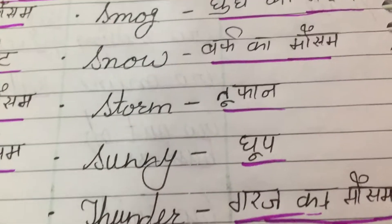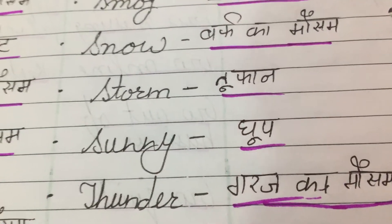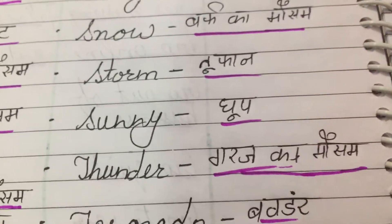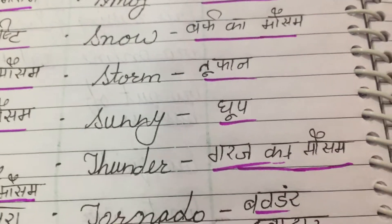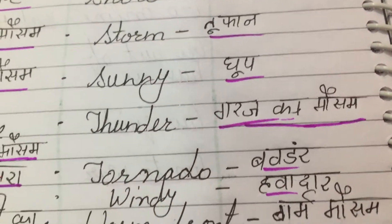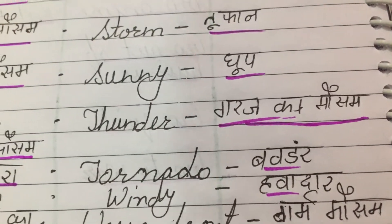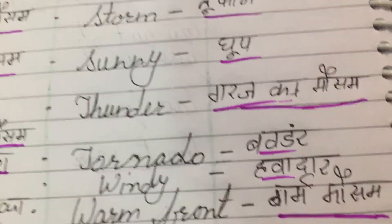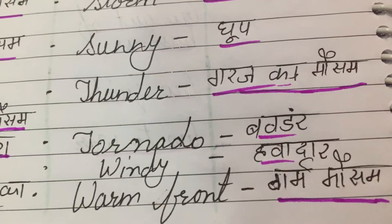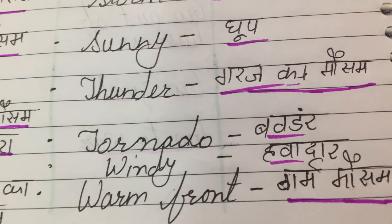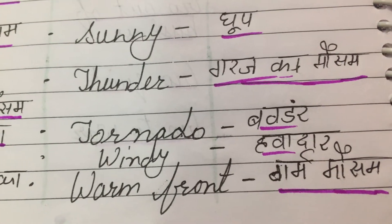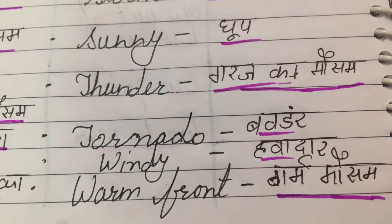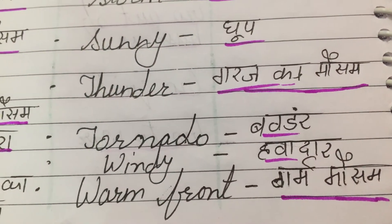Storm means Tufan. Sunny means Dhoop. Thunder means Garaj ka mousam. Tornado means Bawandar. Windy means Havadar. Warm front means Garam mousam.